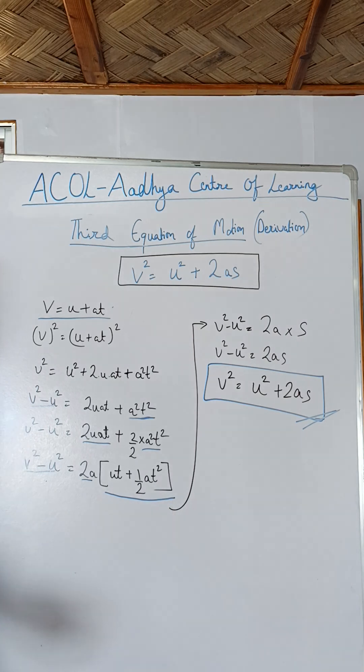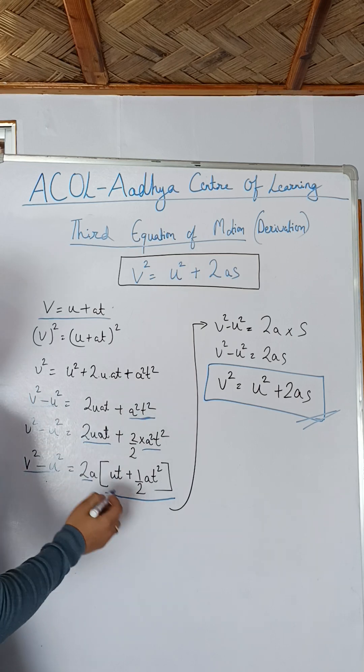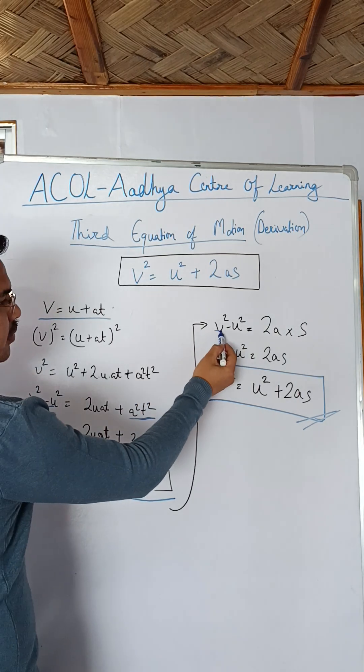So now ut plus 1 upon 2 at square, that is s, so s equals to ut plus 1 upon 2 at square. That is your second equation of motion.